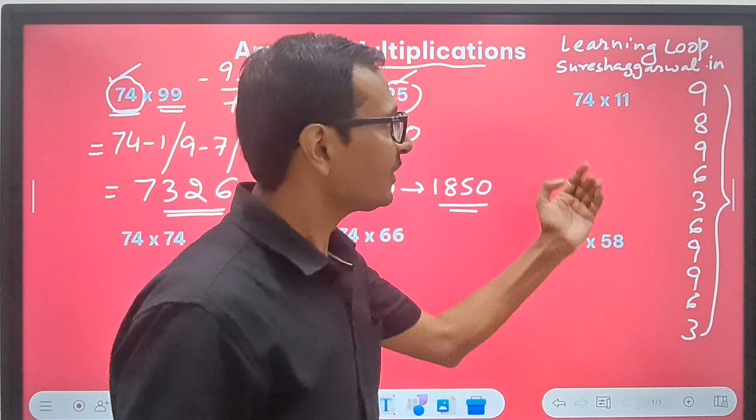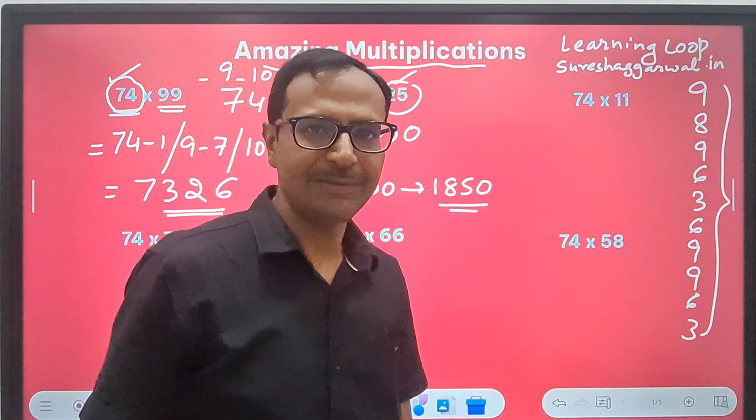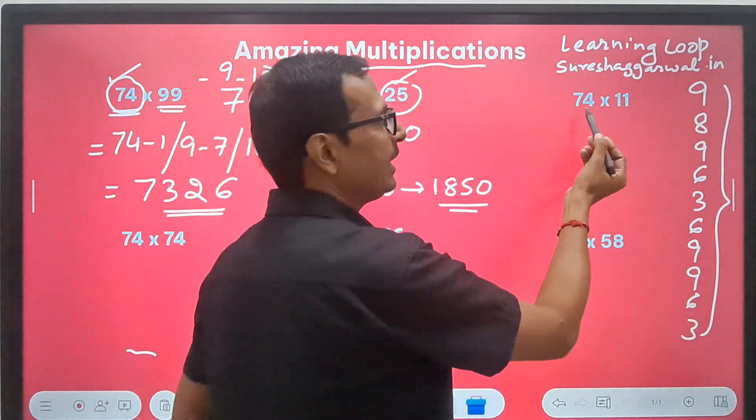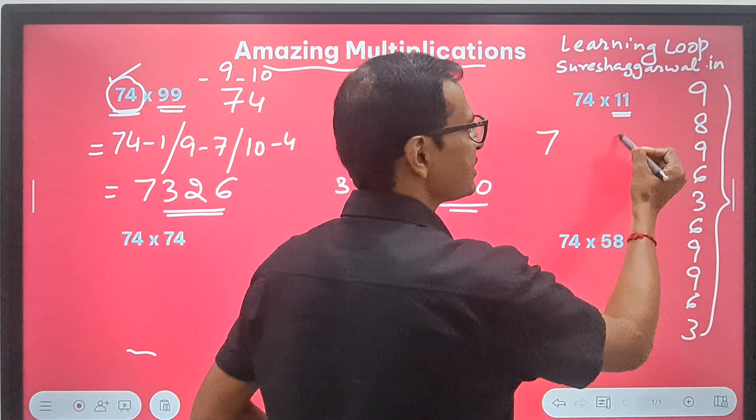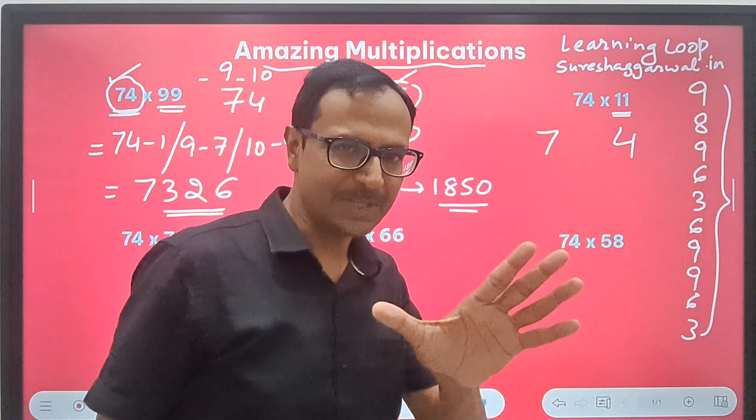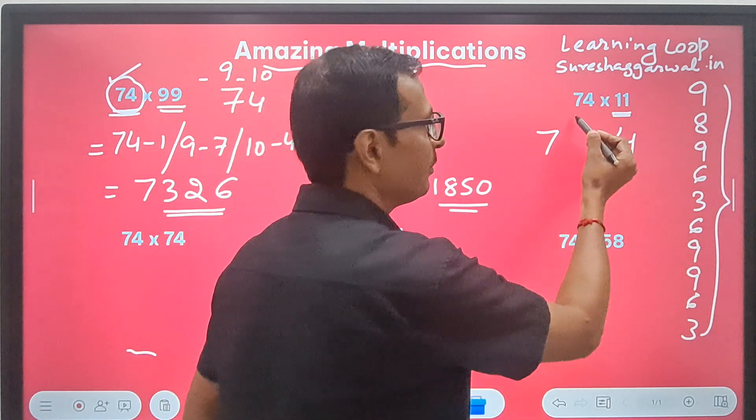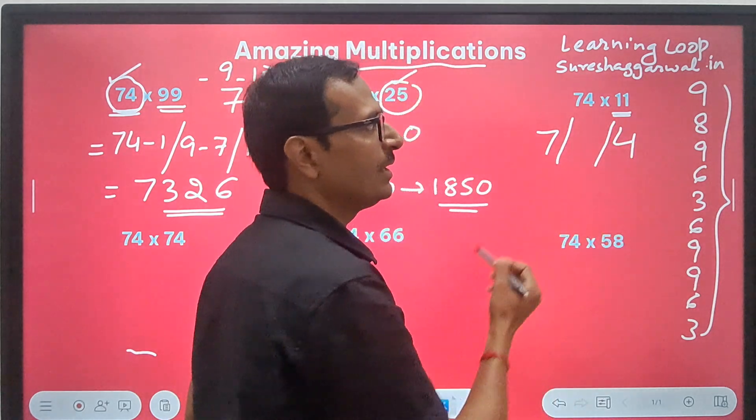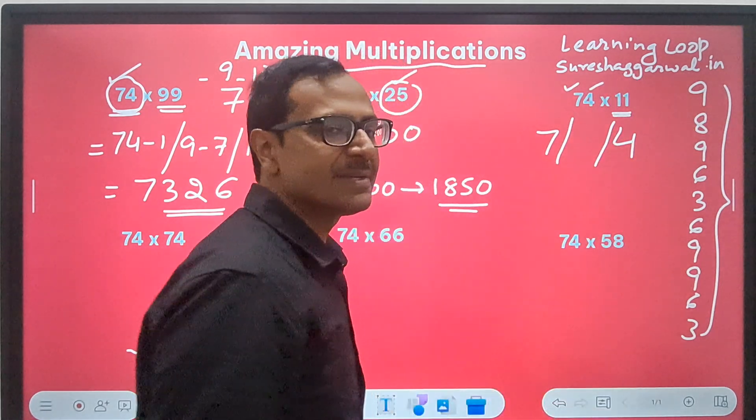Another one here. 74 times 11. Whenever you need to multiply a number by 11, just spread the digits. 74, I have made some space to write something in between. And what is that number to be written in between? The sum of these two digits, 7 and 4.